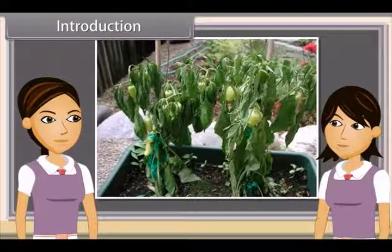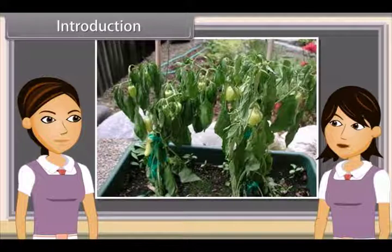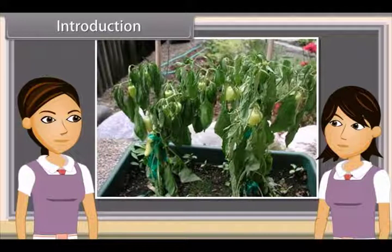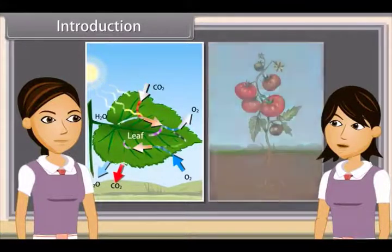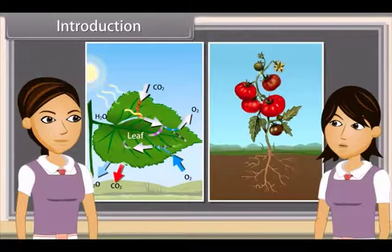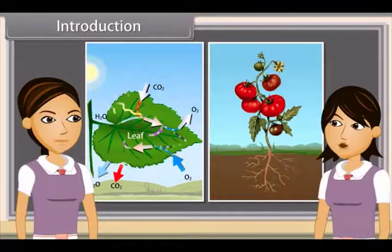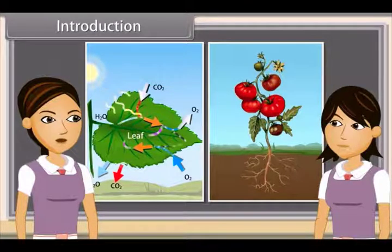We all know that all plants need water. The wilted leaves recover when a plant is added to the soil, which means that water has been conducted upwards into the leaves. We have also learned that leaves need water for photosynthesis. Likewise, the food produced in the leaves has to be transported to other parts of the plant, including the stem, the roots, flowers and fruits. All this transportation is the function of conducting tissues.